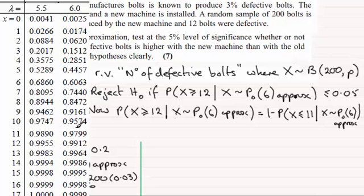So what we've got here then is this is equal to 1 minus 0.9799, and that gives us 0.0201. And when I compare this to the 5%, 0.05, I can see that this value is less than 0.05.